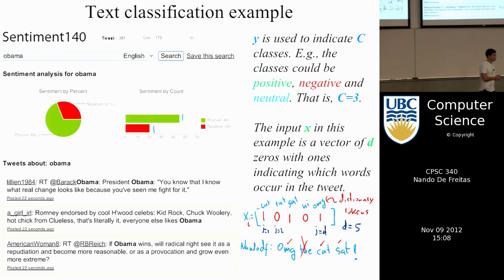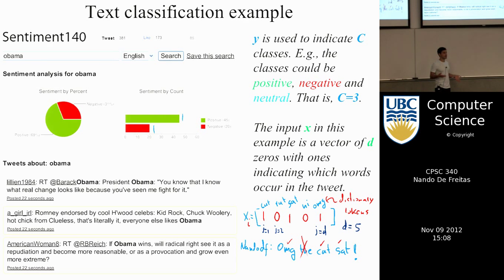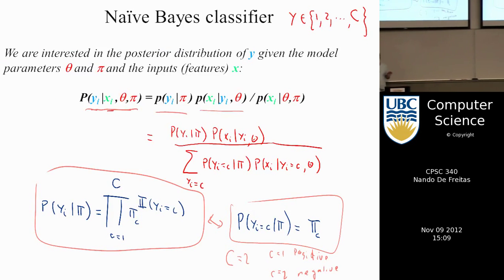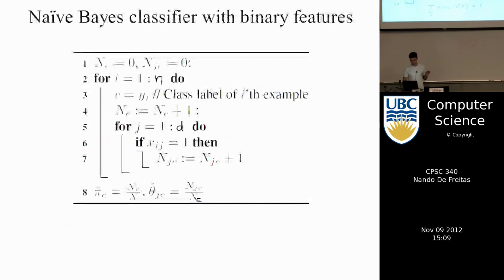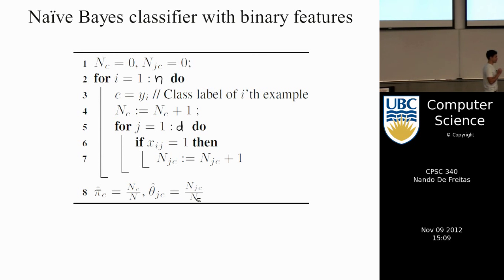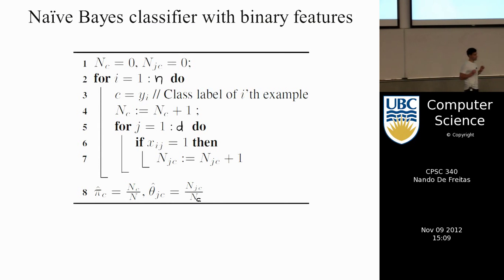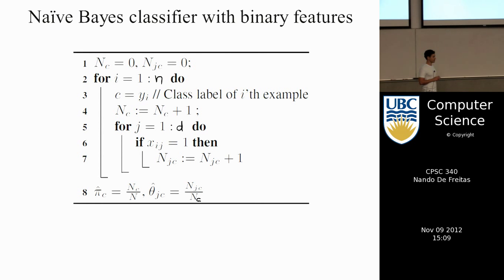Regarding whether Naive Bayes is better for text and neural networks better for images: we're getting ahead of ourselves because I haven't taught neural nets yet. But it will turn out that neural nets will be a lot harder to optimize. This one is extremely simple. The code just needs to compute π — the prior probability of class C — and θ, the probability that word j is on in class C. So if the word is 'Viagra', what's the probability that Viagra appears in the class Spam? And similarly for a respectable class.